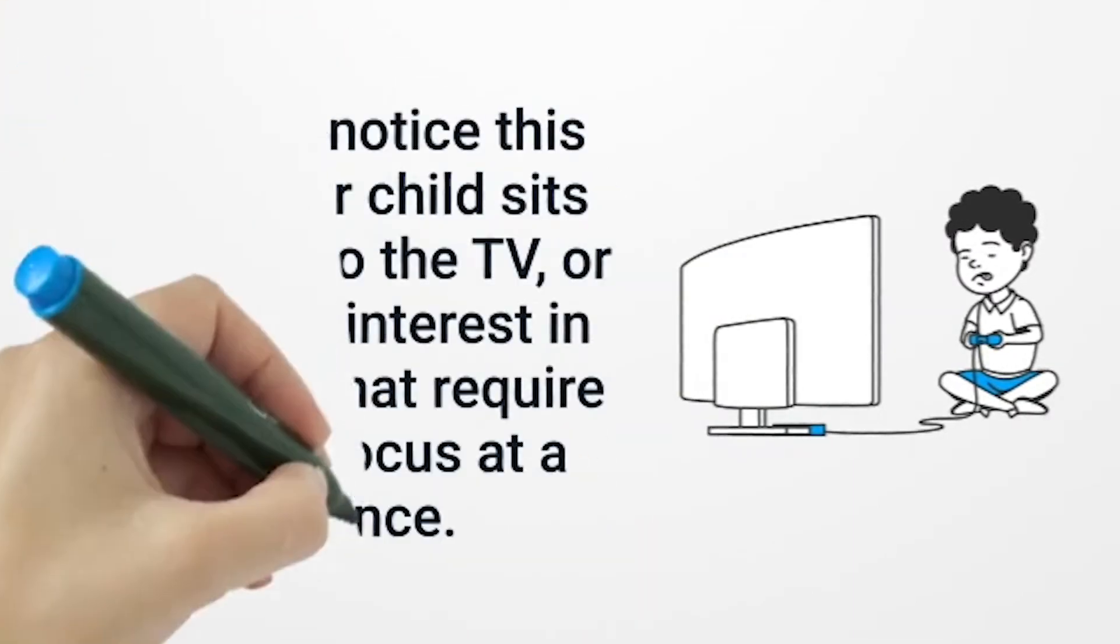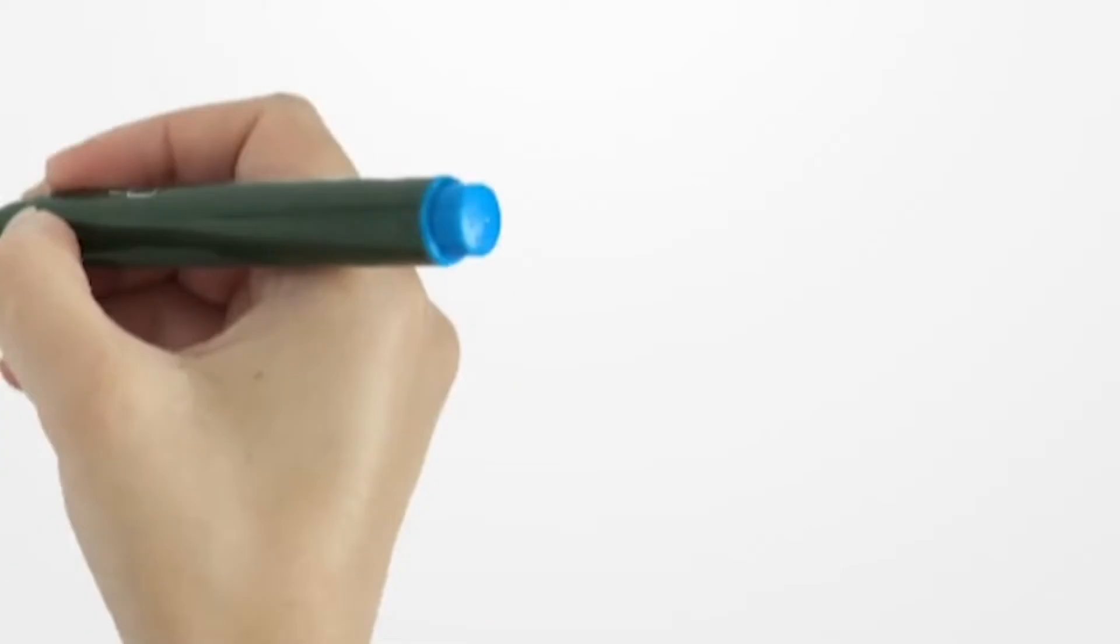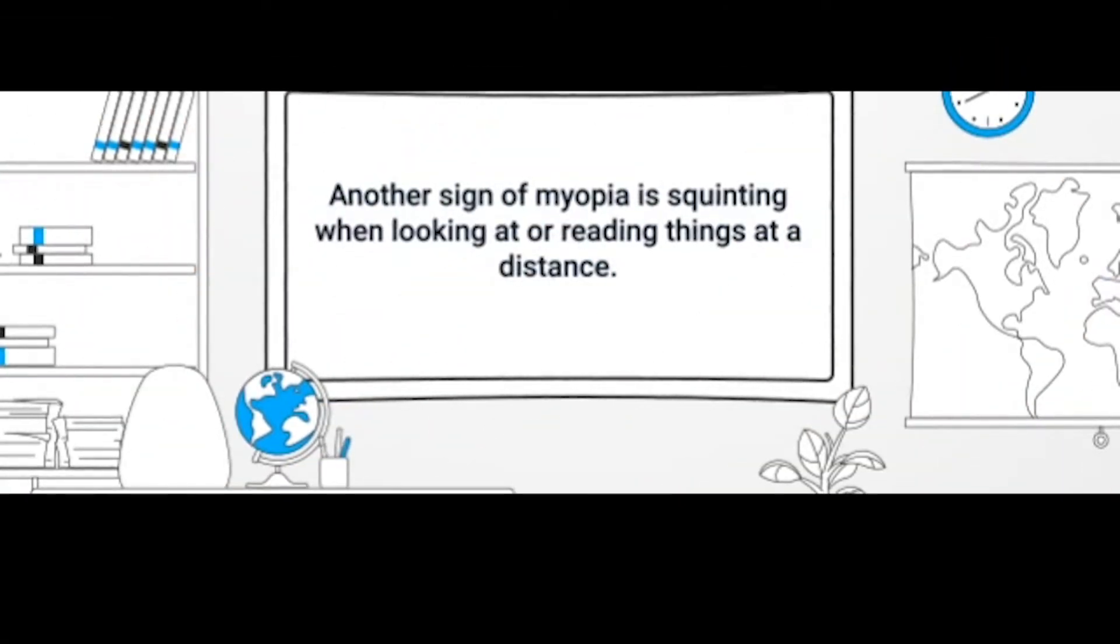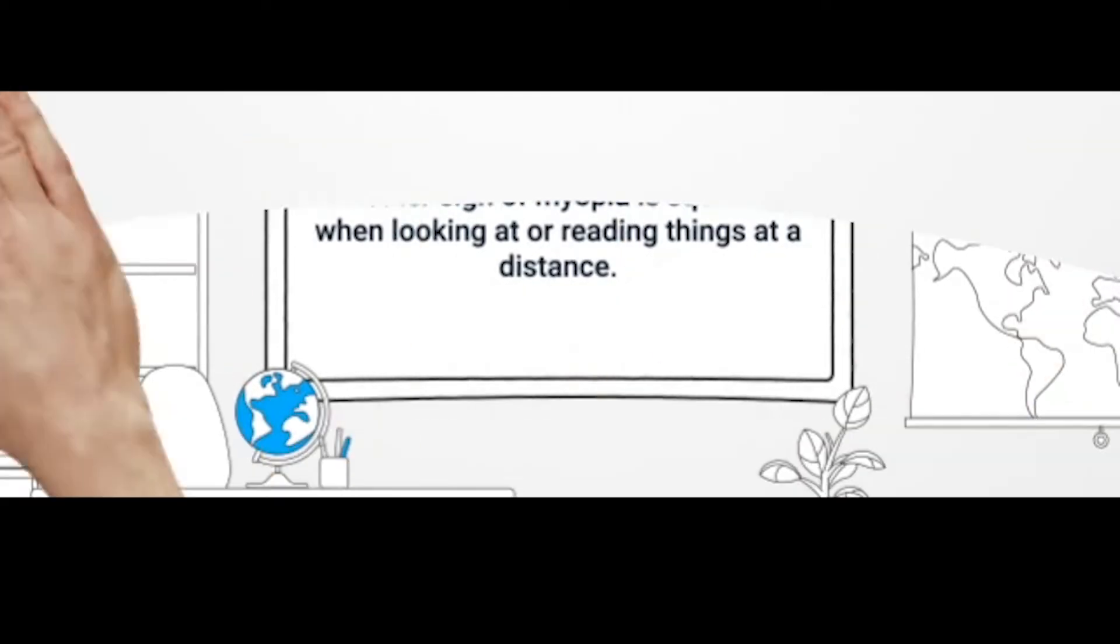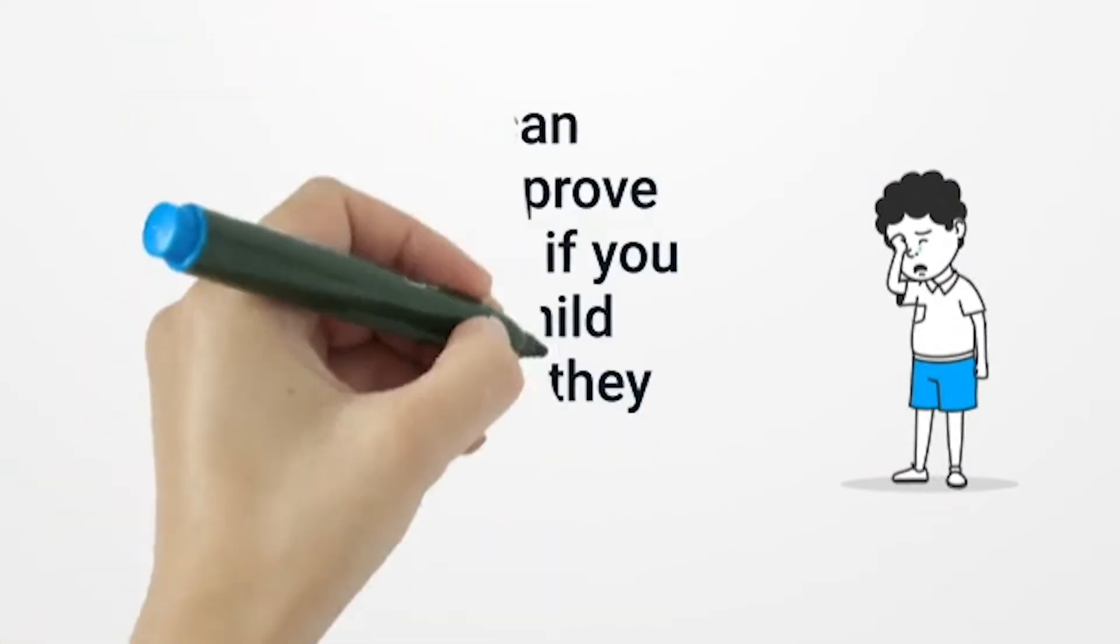Another sign of myopia is squinting when looking at or reading things at a distance. Squinting can temporarily improve blurry vision, so if you notice your child squinting a lot, they may be having trouble seeing.